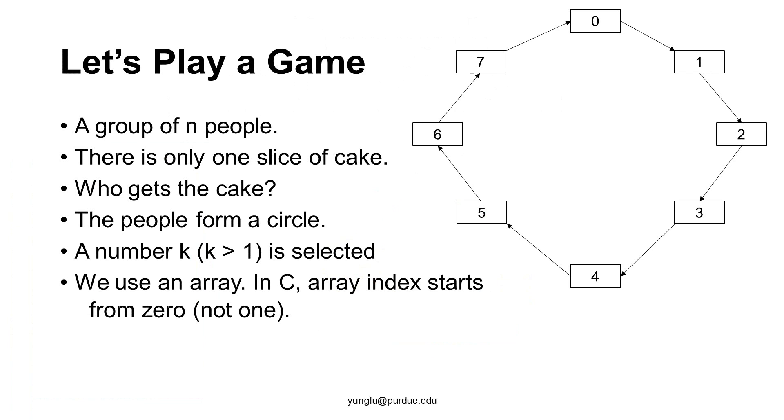Imagine that you have a group of n people and only one slice of cake. How do you decide who gets the cake? The people form a circle and are marked from 0, 1, 2, and so on.